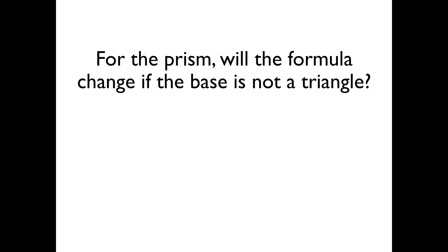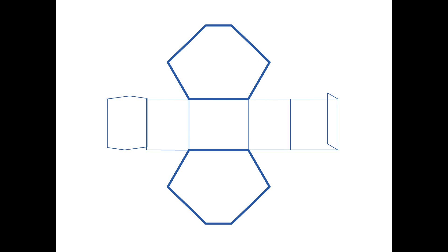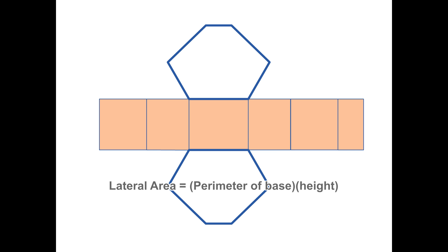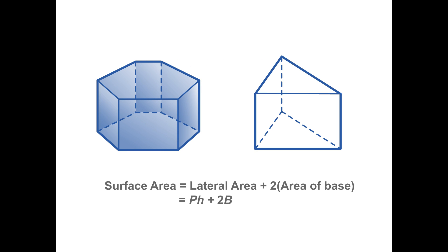For the prism, will the formula change if the base is not a triangle? Let's look at a hexagonal prism. If we unfold this prism to create its net, the length of the rectangle is still the perimeter of the base. This will be true no matter what the shape of the base. So the lateral area of a right prism is always the perimeter of the base times the height. The surface area is dependent on the lateral area and the area of the base — thus the base can change size and shape, but we need only one formula.